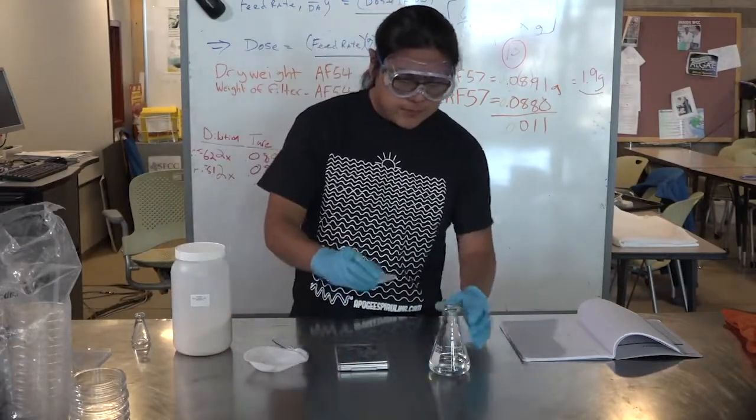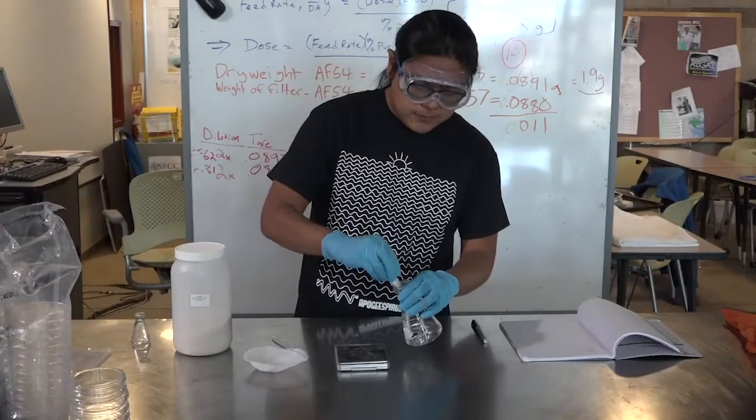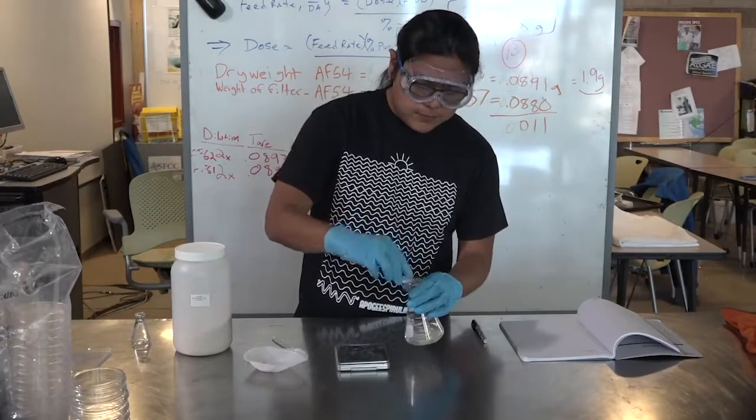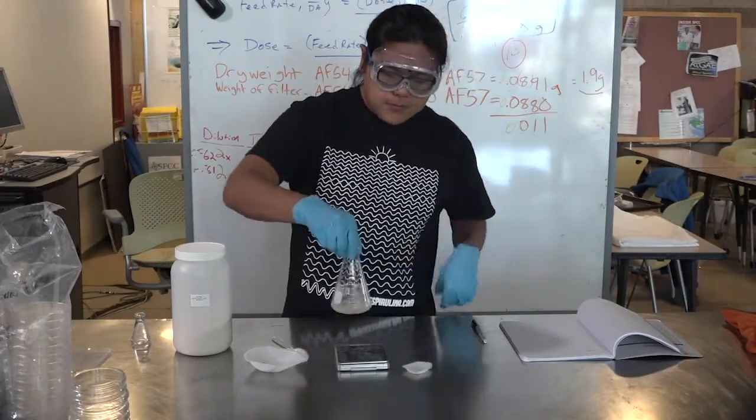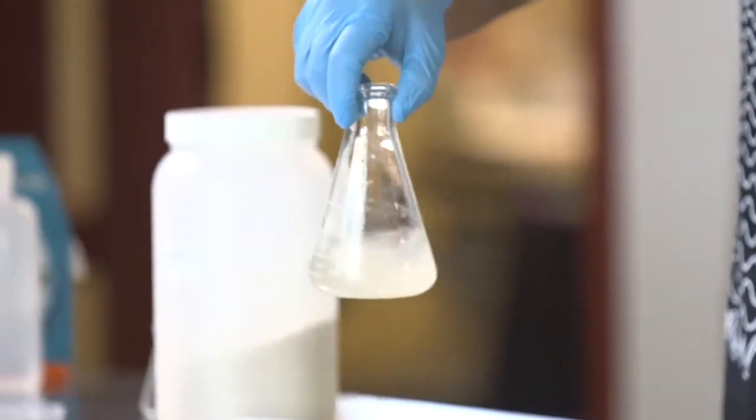We'll add the 1 gram of agar to the media, swirl it around to mix it really good, and put the small Erlenmeyer cap on it.